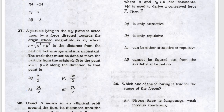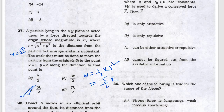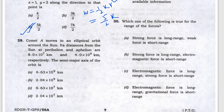Question 27: work done — the potential is (1/2)kr². Put in the values: x = 1, y = 2, so r² = 5. The work done is (5/2)k, so C will be the answer.